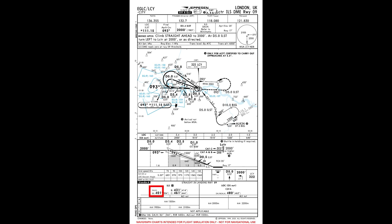We'll be at 2,000 feet the whole time. Once we're established inbound, we intercept the glide slope. Category A will come down to 401 feet, Category B 431, Category C 461 feet. If we get to these heights and we don't see the airport, we're going to go missed. You can see the missed approach procedure on the chart.